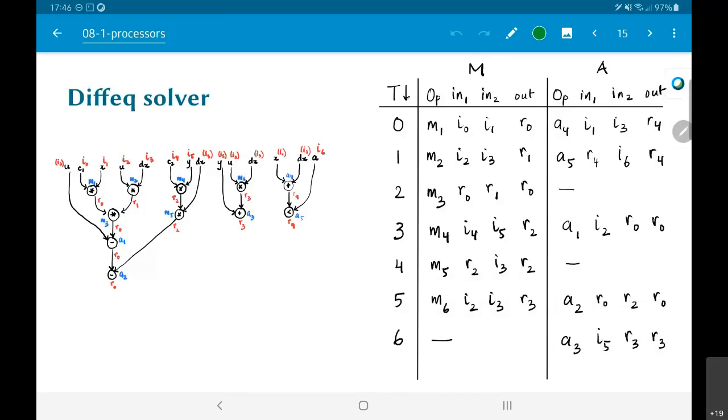The only operation remaining is A3. One input is I5, the other input is R3, and the output is R3 itself. At this time instant, there are no multiplication operations to be done.